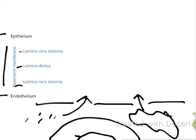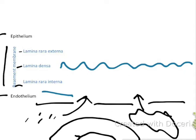The basement membrane is a lot thicker. The lamina densa, the middle layer, is a very thick layer and is probably one of the most important membranes in this whole system. The lamina rara interna is fused to the endothelium and doesn't play as large a role as the lamina densa. The lamina rara externa is fused to the epithelium.